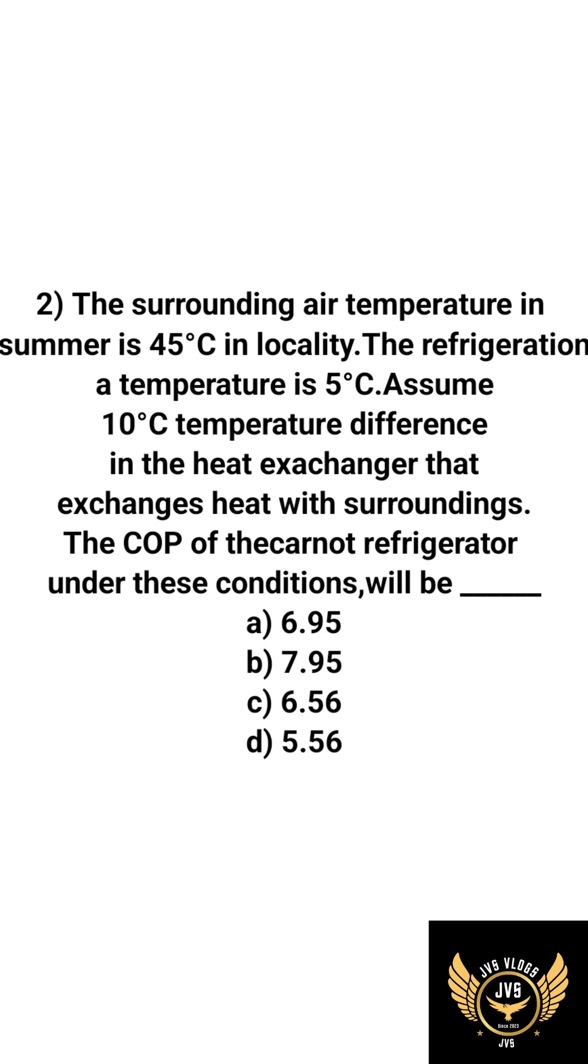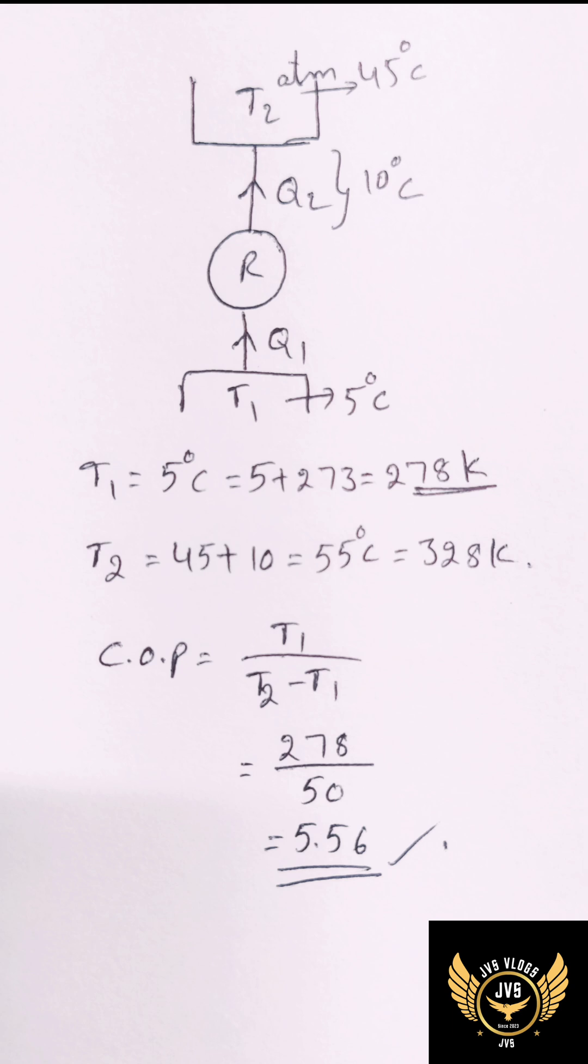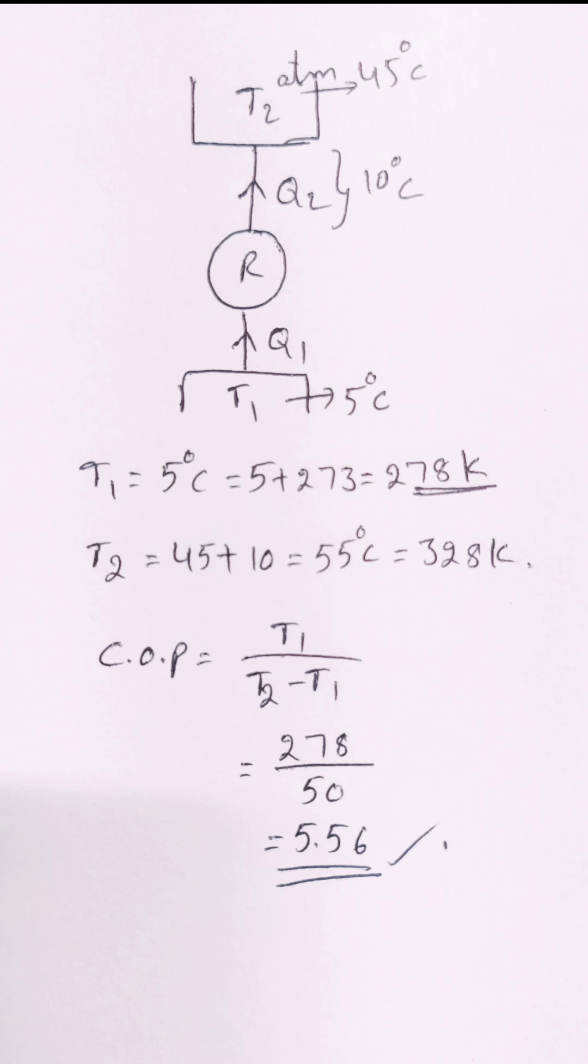So now we'll find the COP of the refrigerator. We have a diagram of the refrigeration equipment. T1 is 5 degrees Celsius. The total heat rejection is 45 plus 10, which is 55 degrees Celsius. So T1 is 5 degrees Celsius and T2 is 55 degrees Celsius.